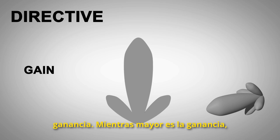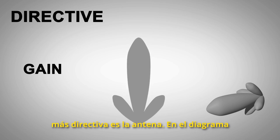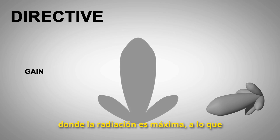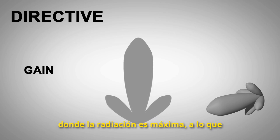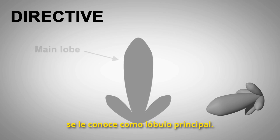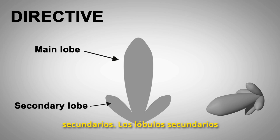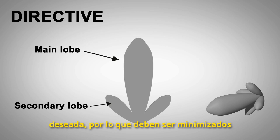The greater the Gain, the more directive the antenna is. Within the radiation pattern, we can observe a region where the radiation is maximum — the so-called main lobe. The areas of smaller amplitude surrounding the main lobe are the secondary lobes. Secondary and back lobes represent undesired radiation, so they must be minimized in directional antennas.